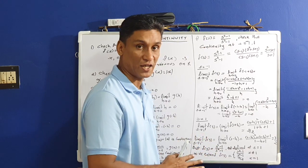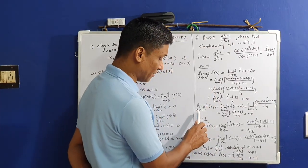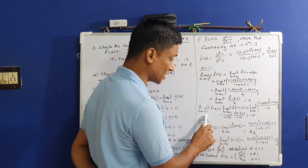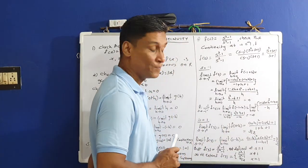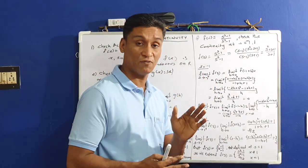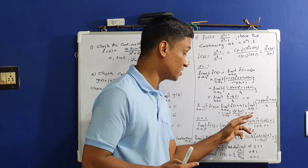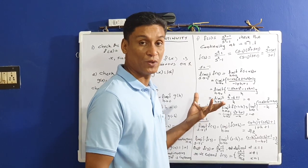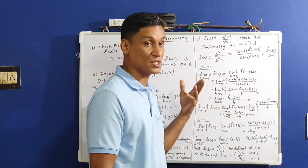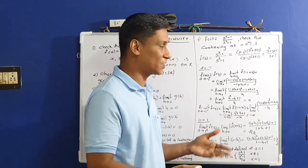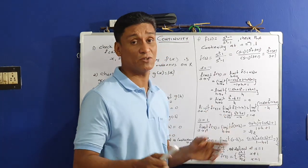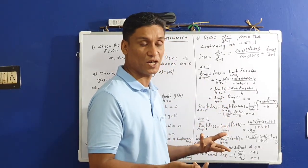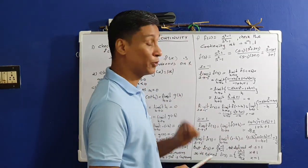The right limit at s = −1 is +∞ and the left limit at s = −1 is −∞. Therefore the function has an infinite discontinuity at s = −1. The function f(s) is not continuous at s = −1.